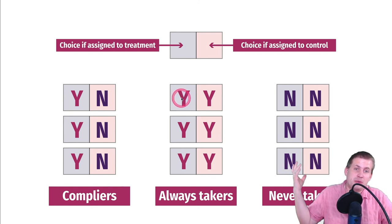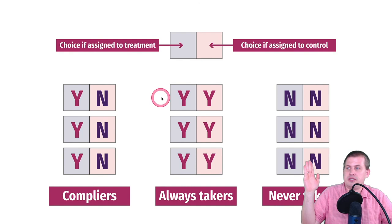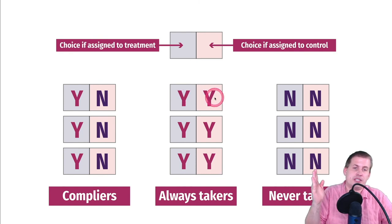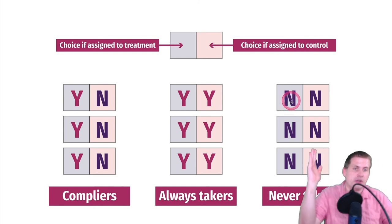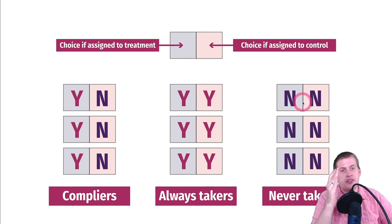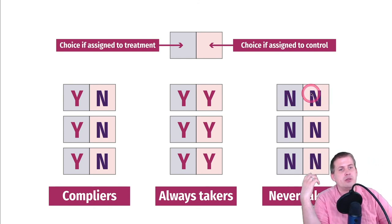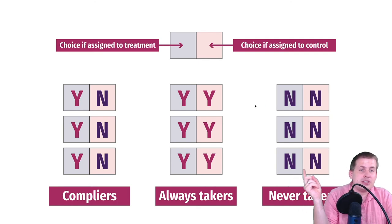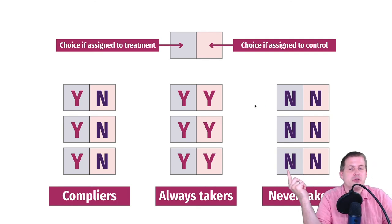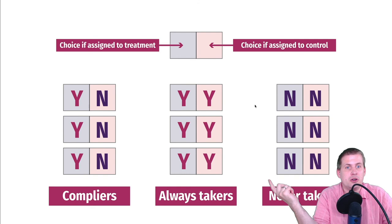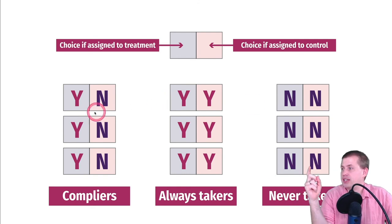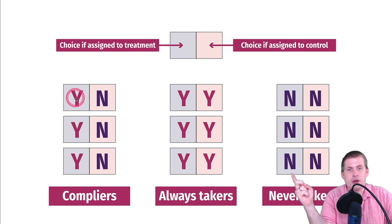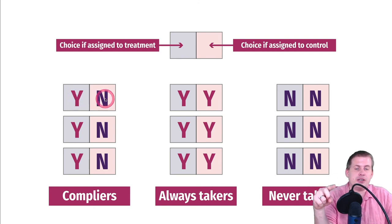Always takers will always do the program regardless of assignment. Never takers will never do it regardless of assignment. The chart here shows only three of the four groups — there are no defiers shown. If there were defiers, it would look like compliers but opposite: they'd say no when assigned to treatment and yes when assigned to control.